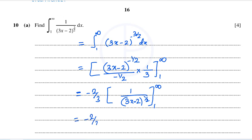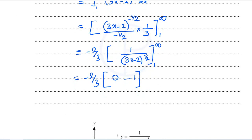Negative 2 over 3: when you substitute infinity as the value for x, you will get 1 over infinity, which is nothing but 0. Then minus, when you substitute the value 1 for x, you will get 3 minus 2 the whole power 1 over 2, which is nothing but 1. So this is equal to 2 over 3.